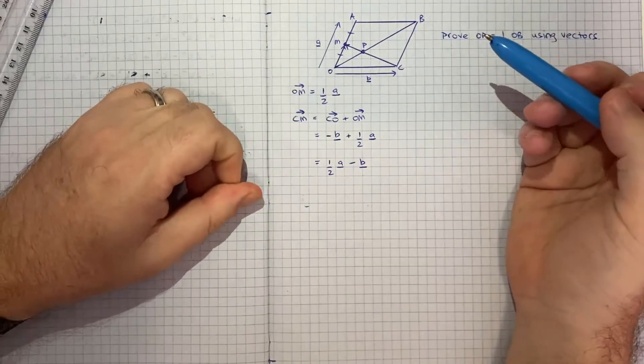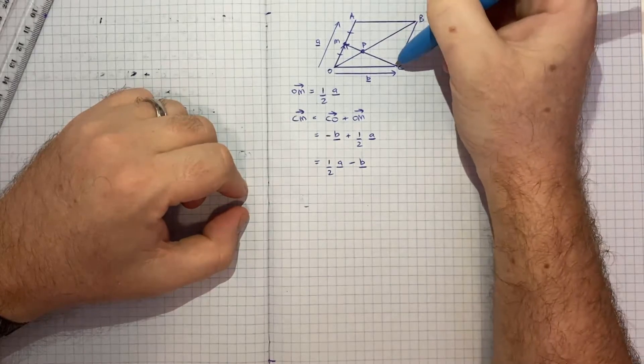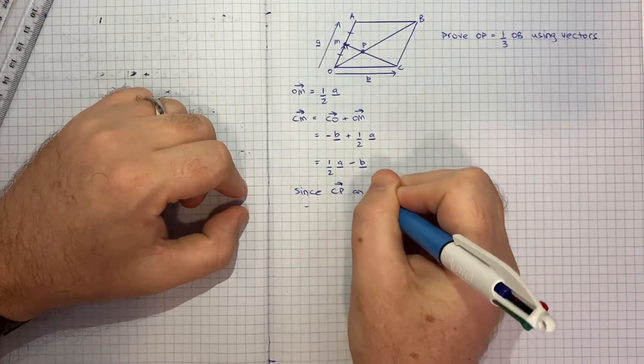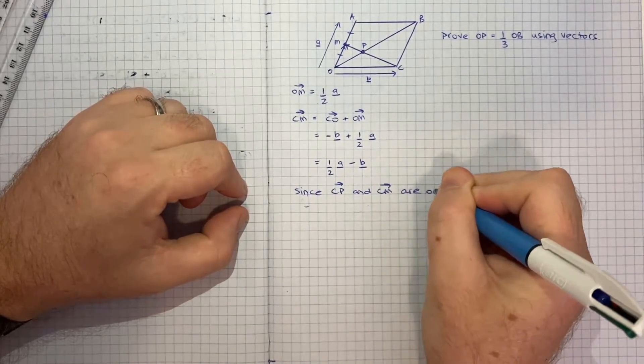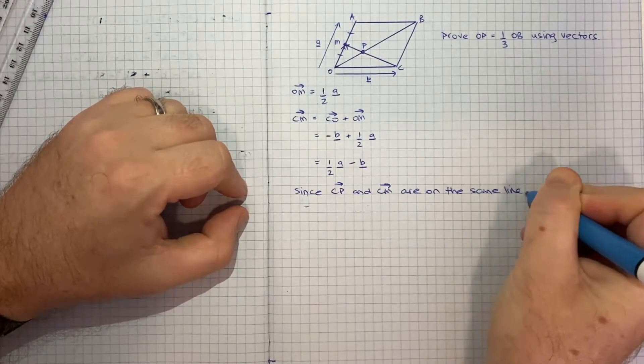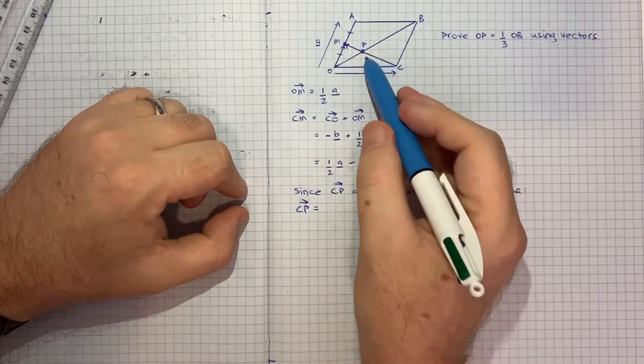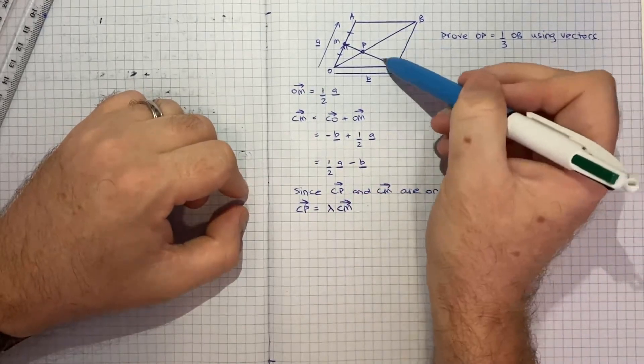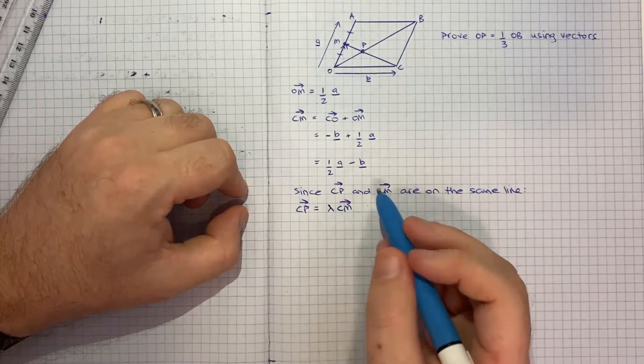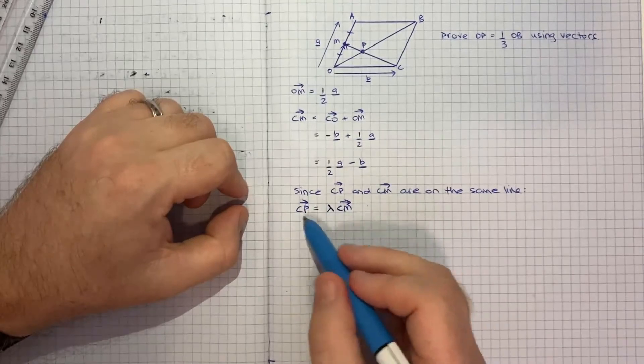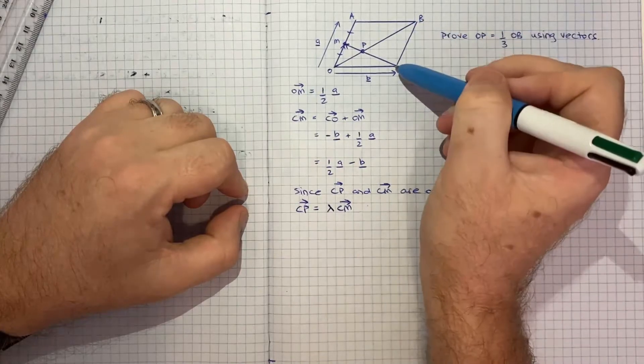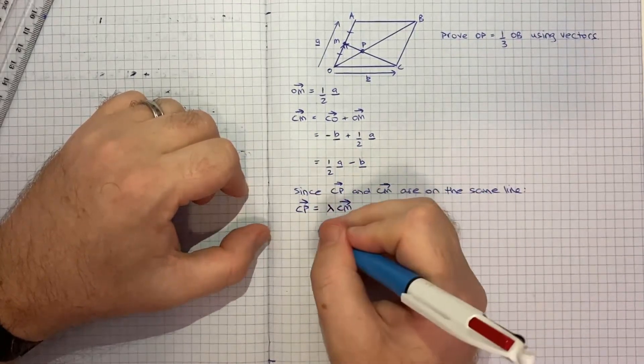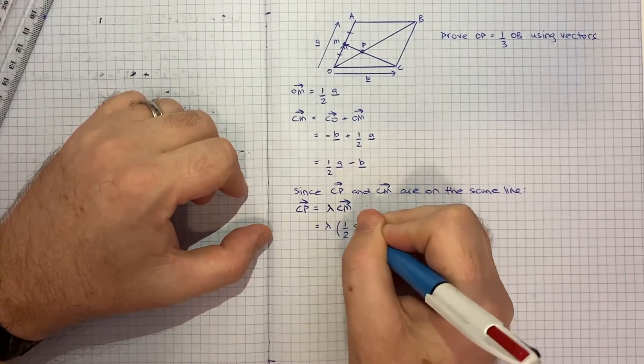Now I think the next thing we can deduce and this may be where this question gets difficult but not impossible is to notice that CP and CM they're on the same line. So we can say since CP vector and CM vector are on the same line, the CP vector is going to be some multiple I'll call it lambda of the CM vector because they're effectively the same vector they just have a different magnitude. So the question is well what's the magnitude I'll just call it lambda. Given we've just found CM we can substitute that in. So we can say that's lambda times a half A vector minus B vector.